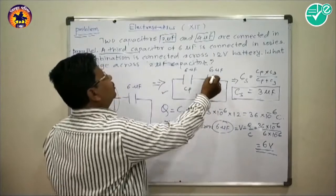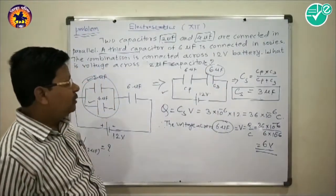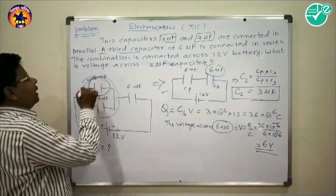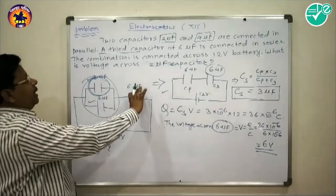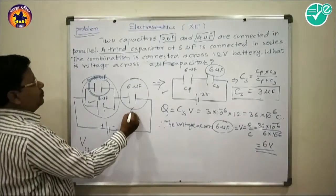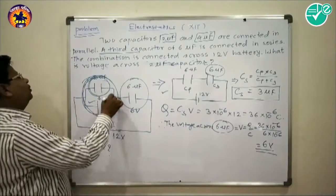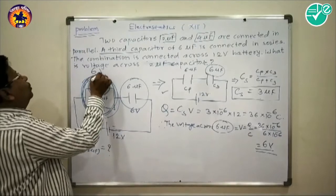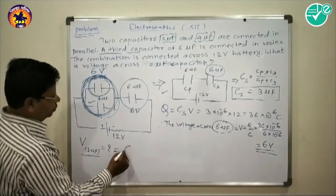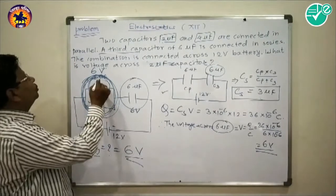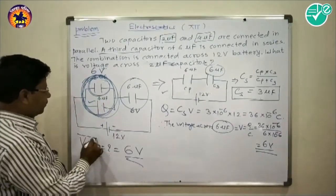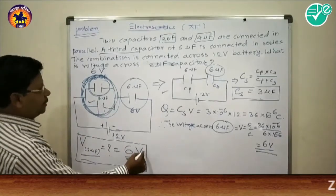Across the 6 microfarad capacitor the voltage is 6 volts. Since the parallel combination and this capacitor are in series, the voltage across the parallel combination is also 6 volts. Therefore, the potential difference across the 2 microfarad capacitor is also 6 volts, because the 2 microfarad and 4 microfarad capacitors are in parallel and PD is the same across parallel elements.